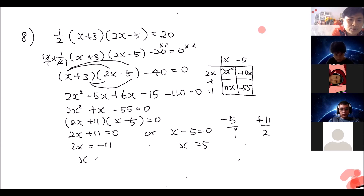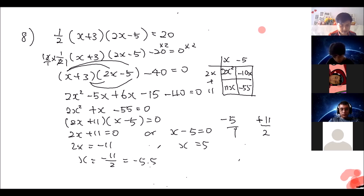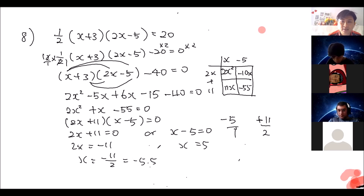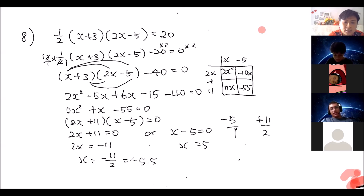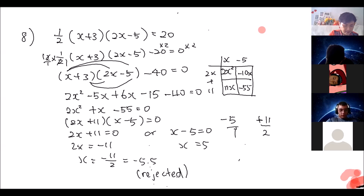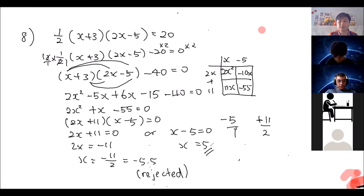Solving: 2x plus 11 equals 0 gives x equals negative 11 over 2, which is negative 5.5. Or x minus 5 equals 0 gives x equals 5. Now, do we accept both answers? We are talking about the length of a triangle, so the length cannot be negative. We reject x equals negative 5.5 and accept x equals 5. That is the final answer.